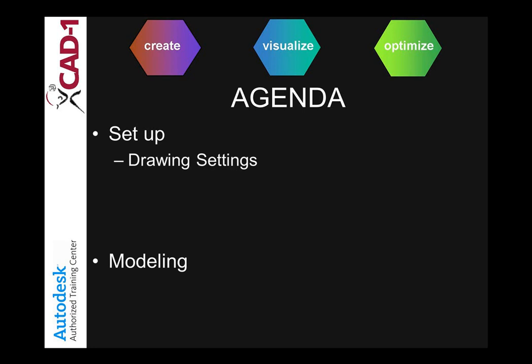You'll also need to create the appropriate styles for the different parts. In my experience, each company wants to see things differently, and this is why we don't provide styles for the parts. You'll also need to set up a handful of rules that will make modeling much easier. Once all of this is done, you'll need to combine the parts, the styles, and the rules into a parts list.